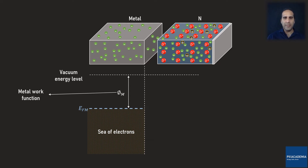What does immediately mean here? It means the electron position is far away from the surface on the atomic scale but still too close to the solid to be influenced by ambient electric fields in the vacuum.